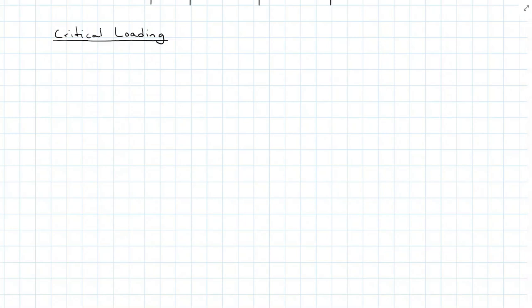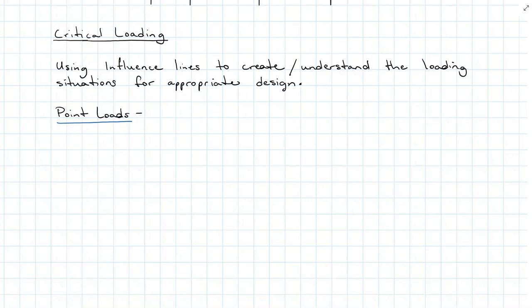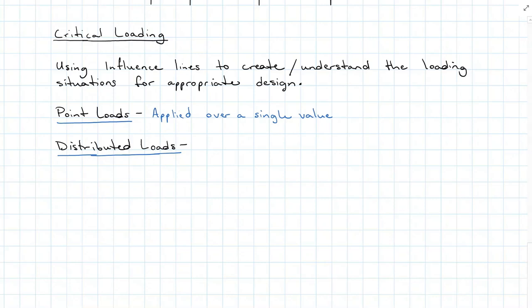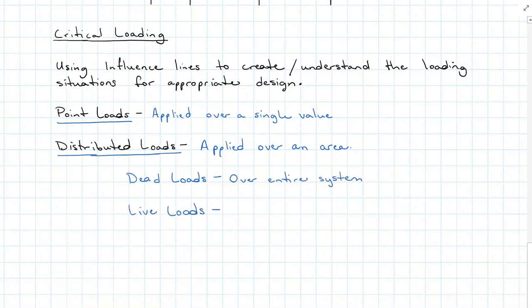Now why do all that work for influence lines? So we can get to critical load. What we've done using a unit load to create our influence lines is make a unitless value that we can then multiply loads by and come up with a critical worst-case scenario. Point loads should be applied over the largest value. Distributed loads should be applied and multiplied to an area. Dead loads are going to be applied over the entire system. Live loads we can apply over just the worst-case scenario — positive or negative — whatever we're designing for. Live loads can also be split up.